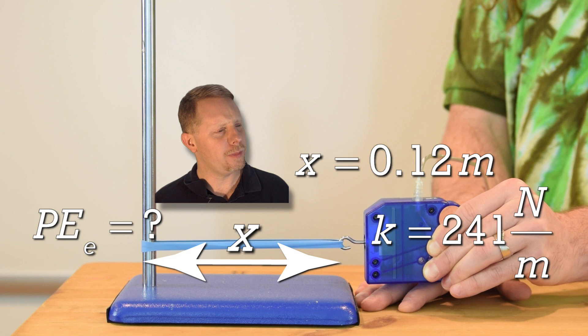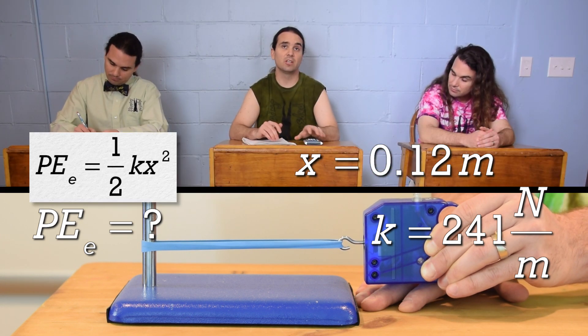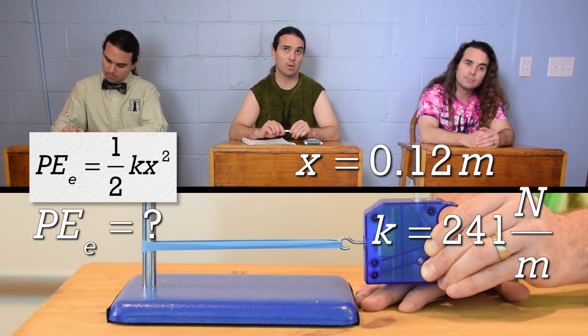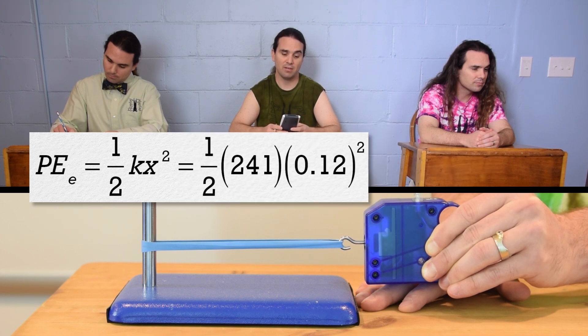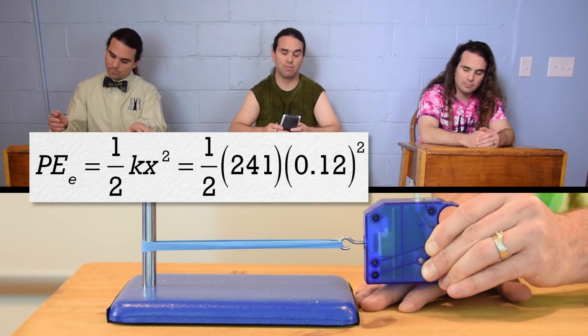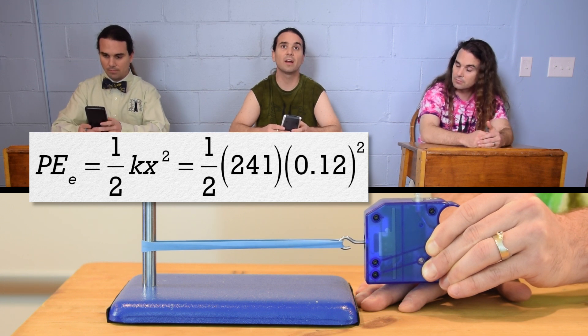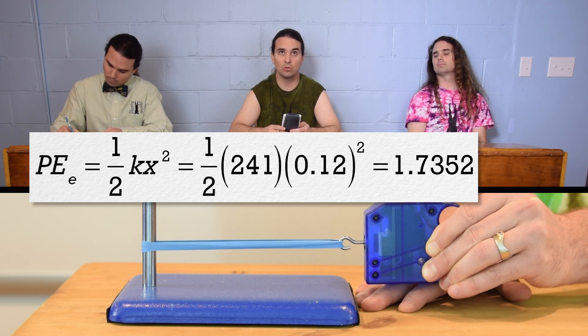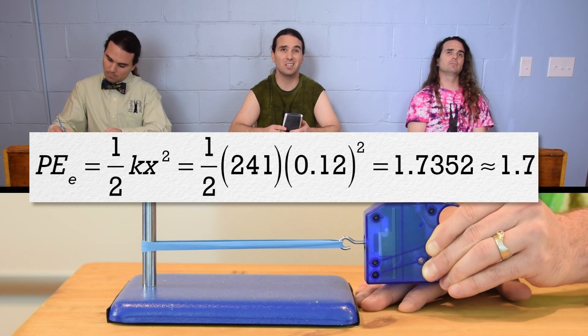Actually, Bobby, would you mind doing that for us? Sure. Thanks. Well, elastic potential energy is one-half the spring constant times the displacement from equilibrium position squared. So it equals one-half times 241 times 0.12 squared, which is 1.7352 or 1.7 with two significant digits.